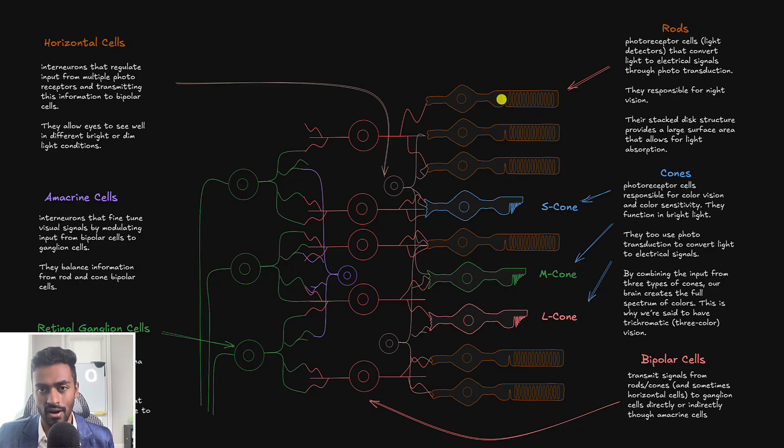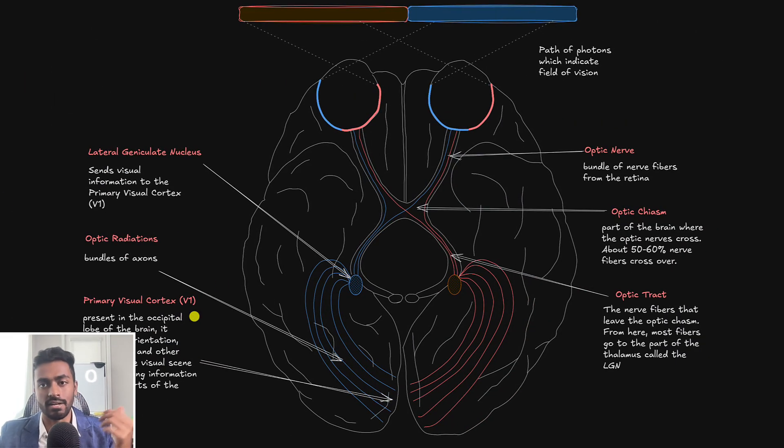This then passes from the rods and cones through the bipolar cells to the ganglion cells. There are also interneurons which are the horizontal cells and the amacrine cells which are used for adjusting vision in different types of light. These ganglion cells have long axons which will be the nerve fibers that bundle together to form the optic nerve. The optic nerve is a cranial nerve that's going to connect the retina to the brain and specifically you'll have the nasal part of these ganglion cells that are going to cross over to the other side of the brain and they will then go to the thalamus part of the brain, specifically the lateral geniculate nucleus.